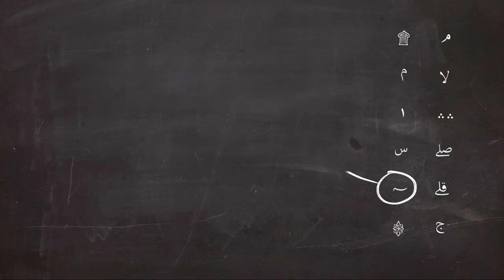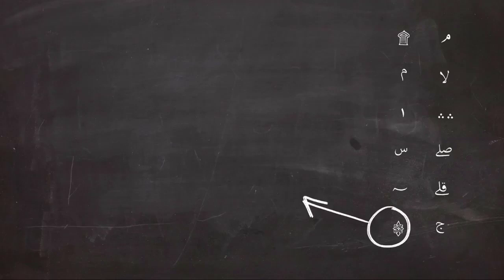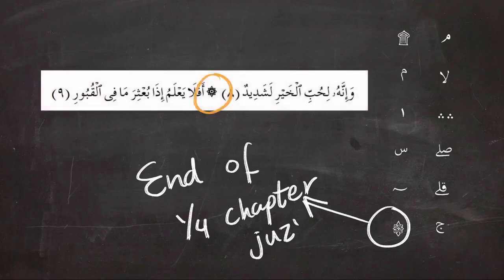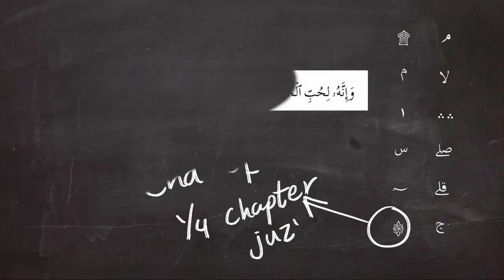The last sign that we're going to talk about today is the sign of the end of the quarter of the chapter or juz. The juz is divided into eight quarters, and at the end of each quarter, you are going to see this sign. It doesn't involve any change in pronunciation and it doesn't affect anything of what you say whatsoever. It is just for the division of the Quran.